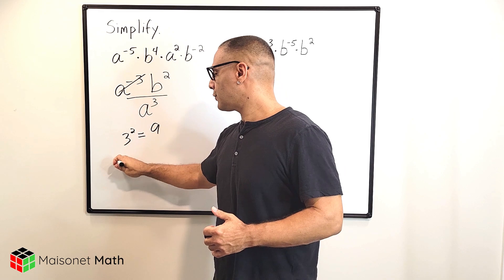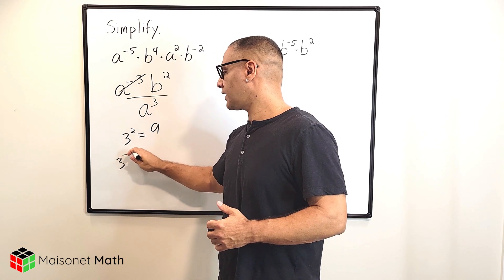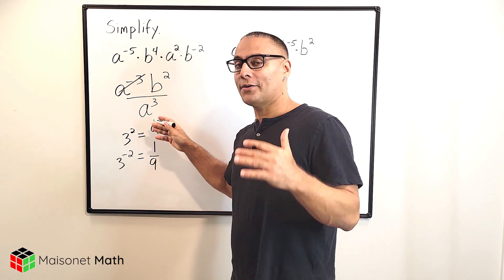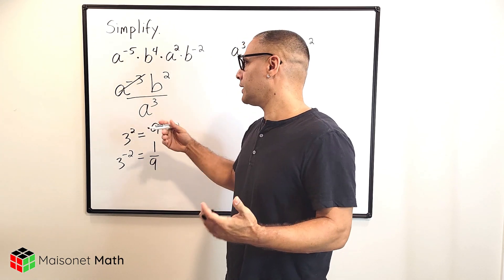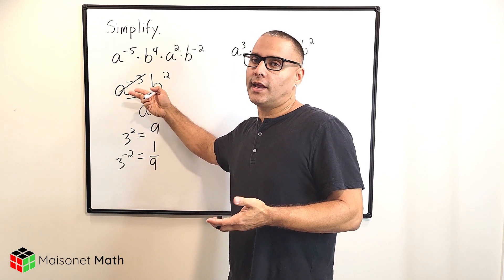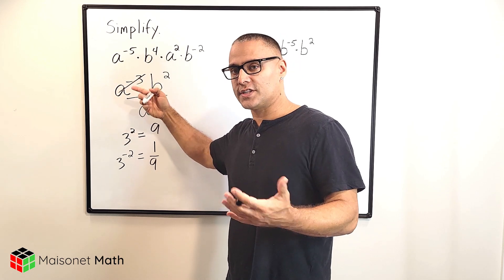Now, if you have three to the negative second power, that is simply equal to one-ninth, which is the reciprocal of nine. So all we're really doing is taking something that has a negative exponent and writing it as a positive value by stating it as its reciprocal.